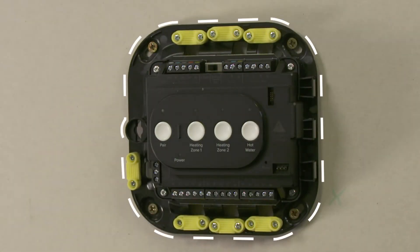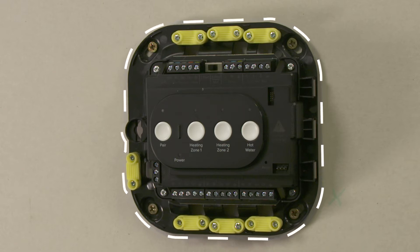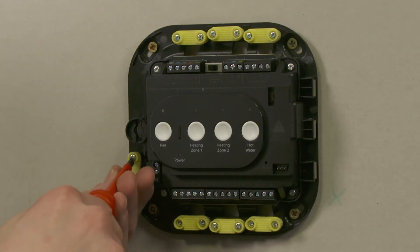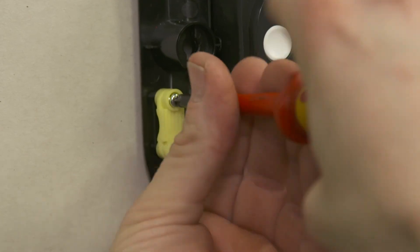The smart wiring center must be wall mounted. Use the fixing points and suitable fixings for the wall type. Wiring for the smart wiring center can be either through the rear of the device or surface mounting. When surface mounting any wiring, ensure to use the wiring clamps provided.